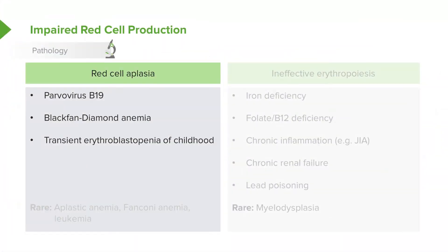Children can also get a unique disease, usually in the first few years of life, called transient erythroblastopenia of childhood. In this condition, they transiently stop making red blood cells and then recover a few months later. Very rarely, patients could have aplastic anemia, Fanconi anemia, leukemia, or other causes.